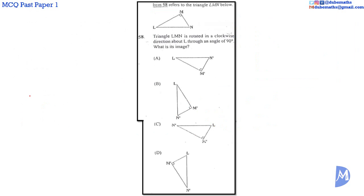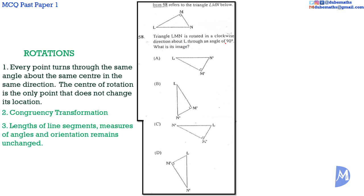Question 58. Triangle LMN is rotated in a clockwise direction about L. So, L is the center of rotation. It does not move. To an angle of 90 degrees. Let us rotate the point N 90 degrees about L in a clockwise direction. N prime, the image point of N, is here. Notice N's new relative position to L.